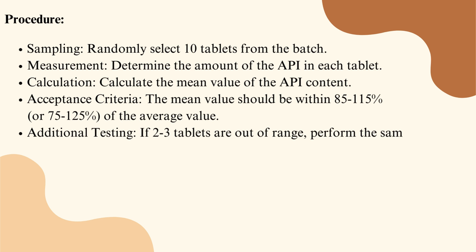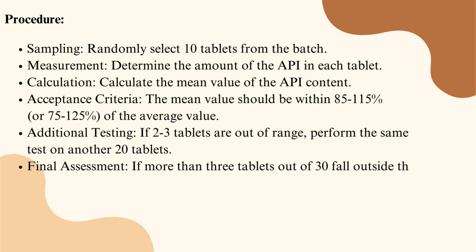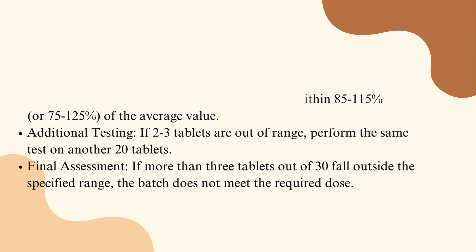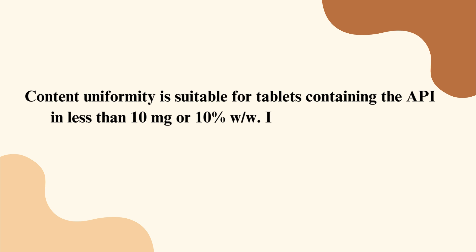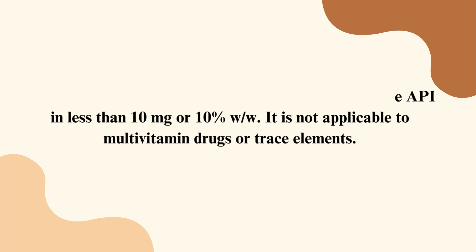Additional testing: if 2 to 3 tablets are out of range, perform the same test on another 20 tablets. Final assessment: if more than 3 tablets out of 30 fall outside the specified range, the batch does not meet the required dose. Content uniformity is suitable for tablets containing the API in less than 10 mg or 10% w/w. It is not applicable to multivitamin drugs or trace elements.